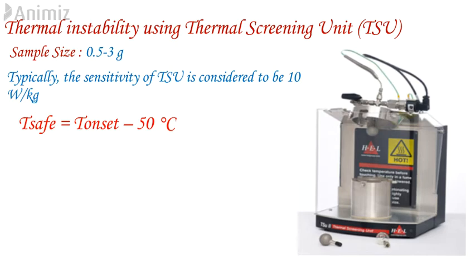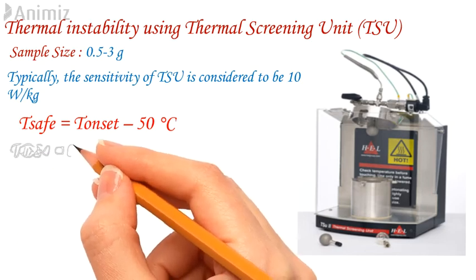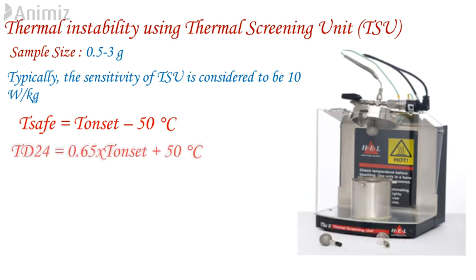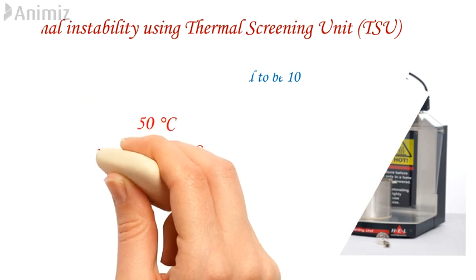Adiabatic decomposition temperature can also be determined from TSU, as ADT24 = 0.65 × T-onset + 50°C. If TSU shows an onset of decomposition that is very close to the operating temperature, then it is better to perform adiabatic testing like ARC or PHITECH to confirm the exact onset of decomposition before taking appropriate measures.